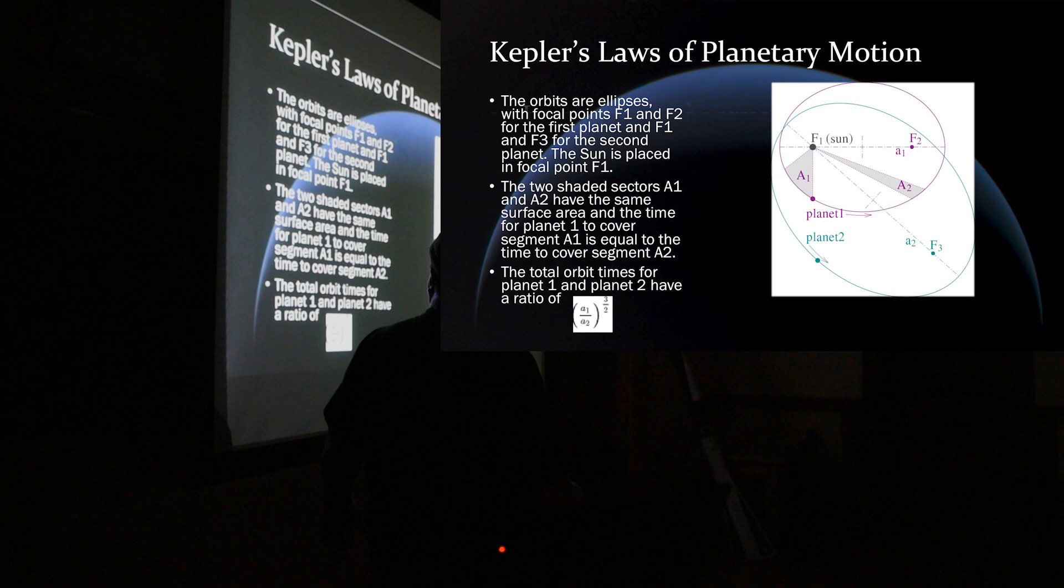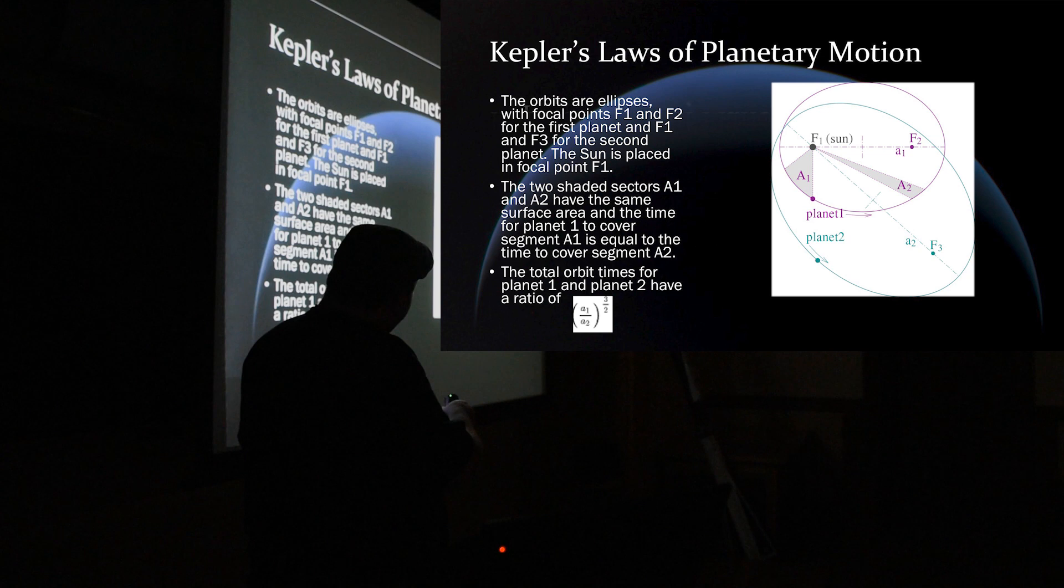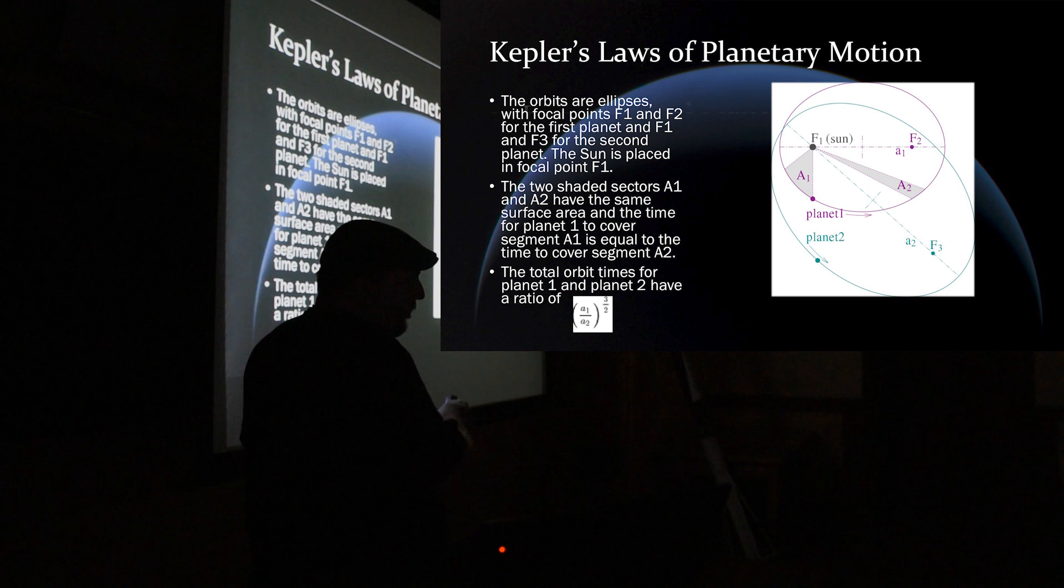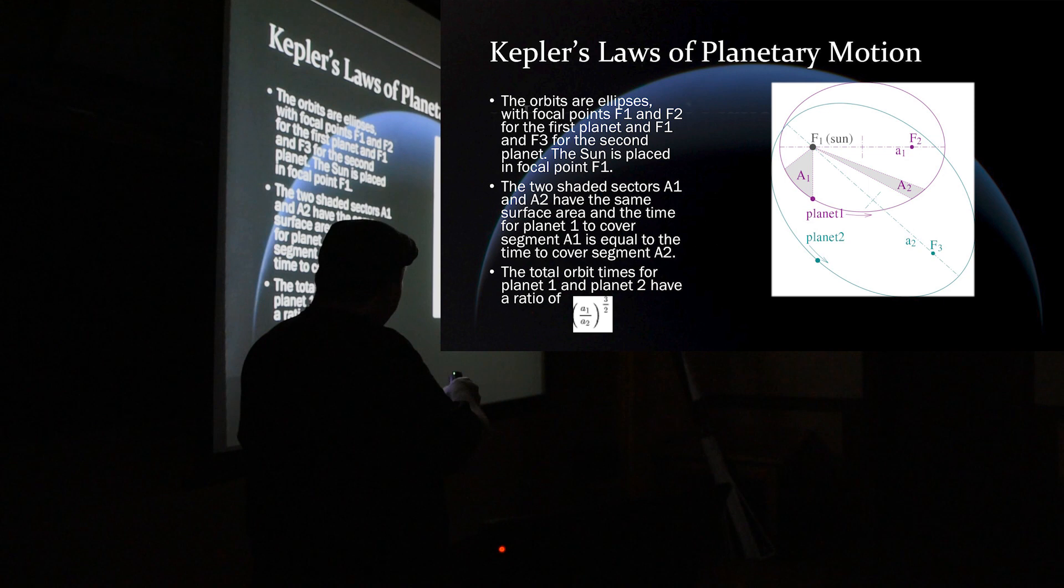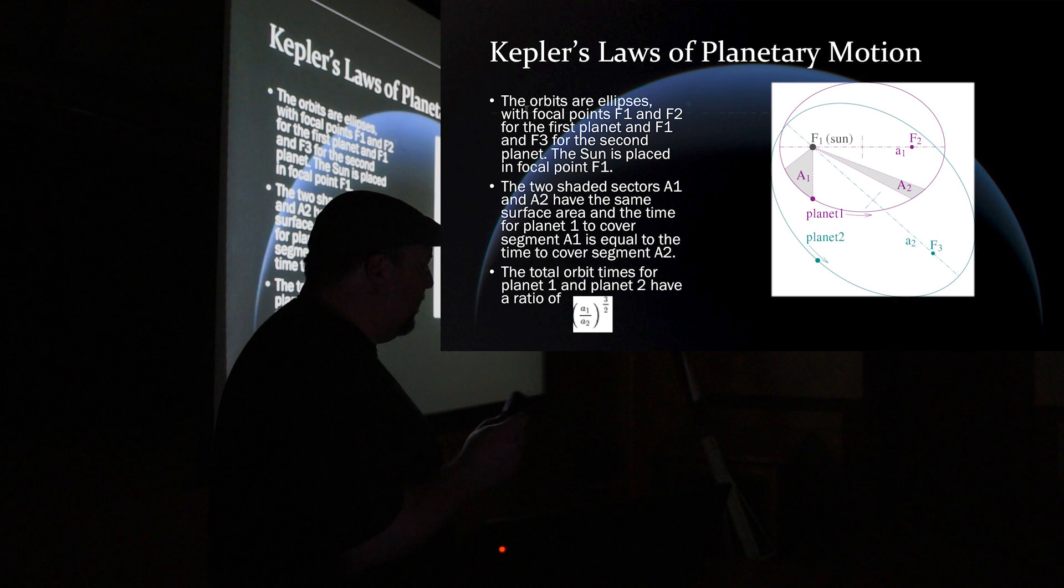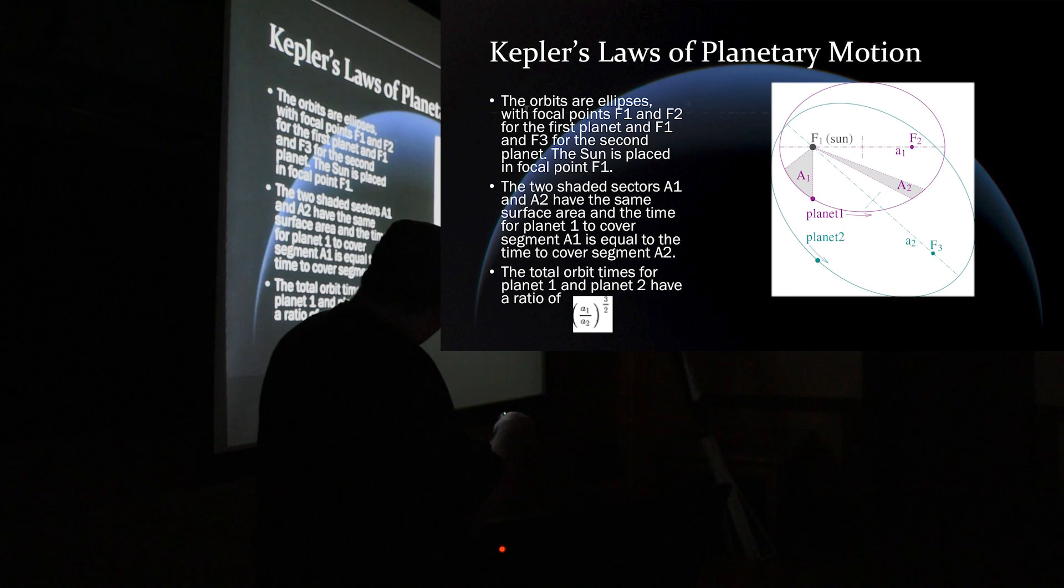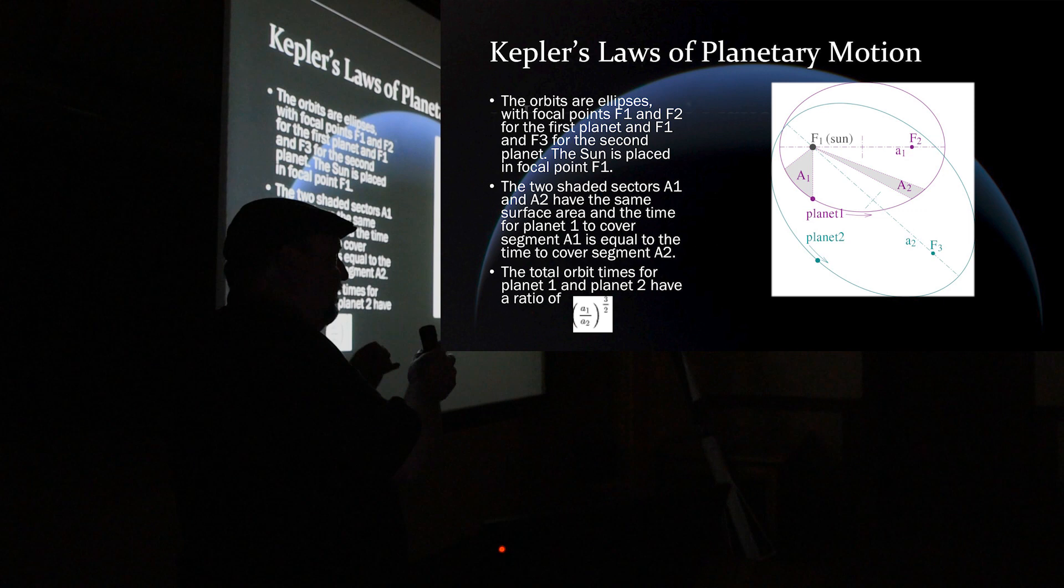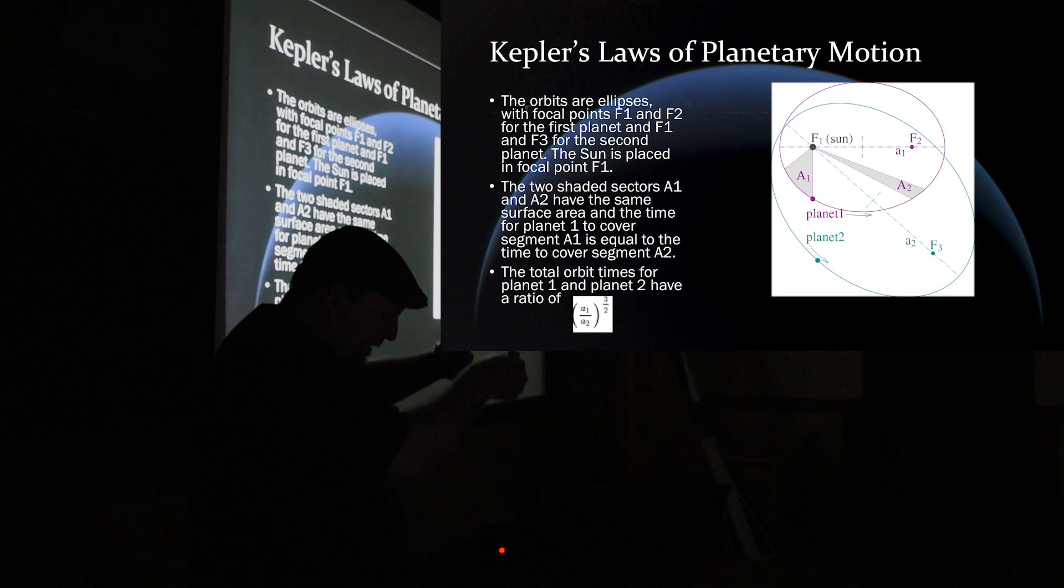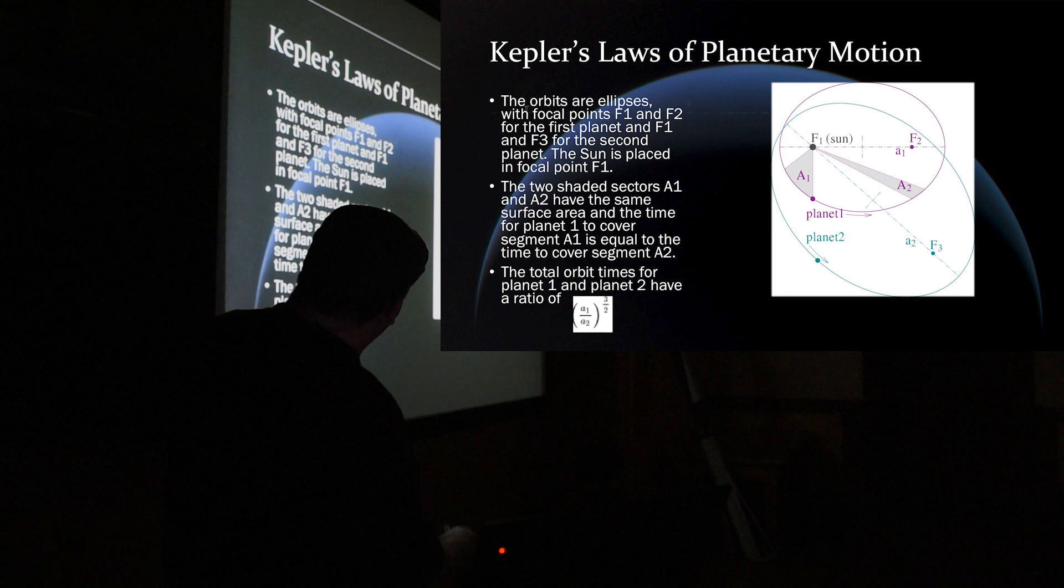The second law talks about shaded areas. The time it takes for this planet to go from here to here and from here to here, the area of these two angles are equal. So as the planet goes closer to the first focal point, it goes a little faster, and as it goes out, it goes a little slower. So that's the second law. Third law I'm not very familiar with. Just know that the total orbit times for planet one and then planet two have this ratio. And this really kind of goes into effect where it's like this planet and this planet, there's a ratio between the amount of times this planet orbits and then the second planet orbits and then the third planet orbits, et cetera. So that's the formula that he came up with.